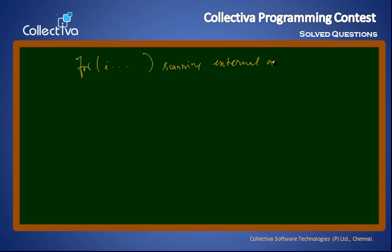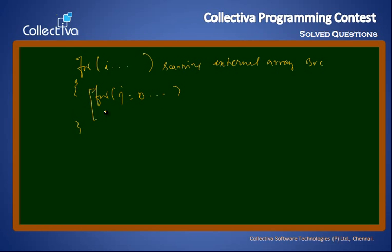If we look at the source array, we take one element and compare it against all elements of the destination array. In the inner loop, we will check a condition to find whether the element is present or not.